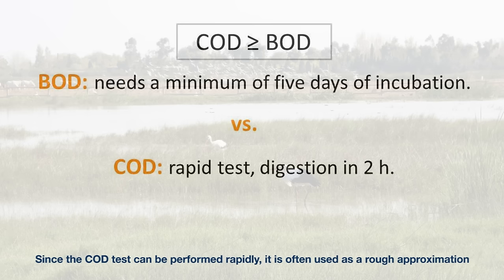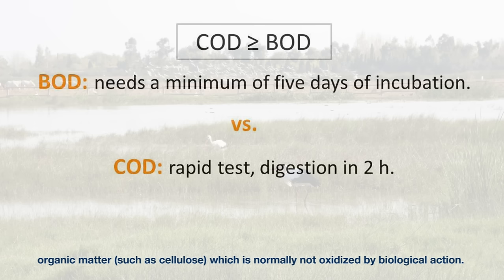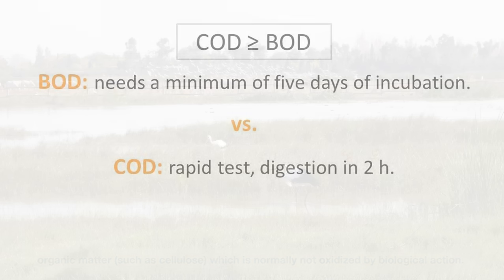Since the COD test can be performed rapidly, it is often used as a rough approximation of the water's BOD, even though the COD test measures some additional organic matter, such as cellulose, which is normally not oxidized by biological action.